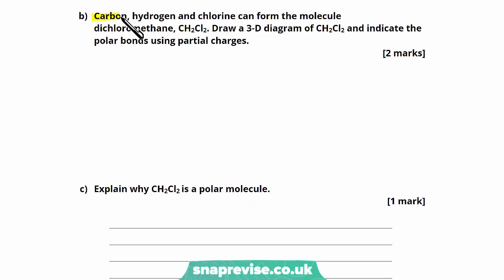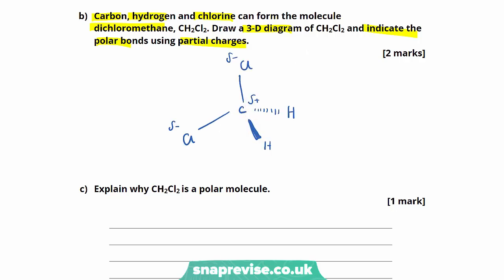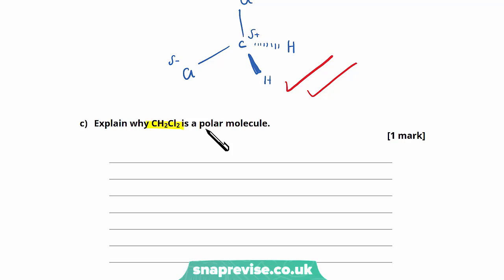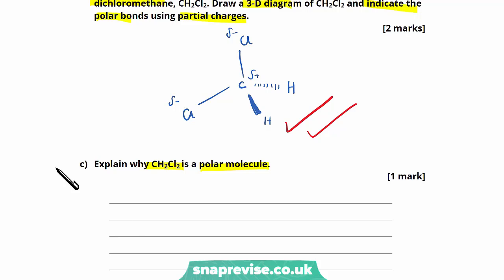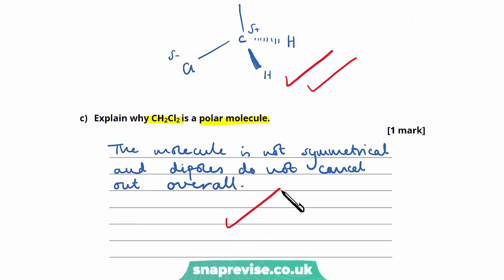Part b: draw a 3D diagram of dichloromethane CH2Cl2 and indicate the polar bonds using partial charges. Using our knowledge of bonding, dichloromethane will take a tetrahedral shape. We draw it using wedges to show atoms in different planes, remembering to use dipoles to show the partial charges. We get one mark for the correct 3D structure and one mark for the correct dipoles. For part c, to show why CH2Cl2 is a polar molecule: the molecule isn't symmetrical and therefore the dipoles don't cancel out - that simple explanation gets us the one mark needed.